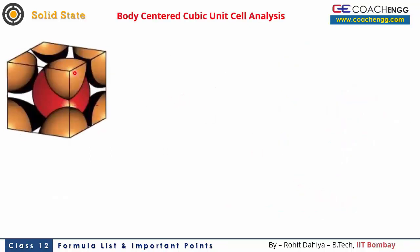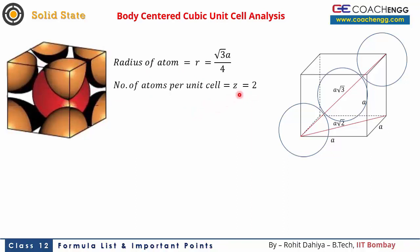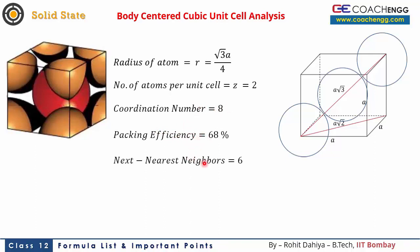Now let's look at the body-centered cube (BCC). Here there are atoms at all 8 corners, and one atom exactly at the body center of the cube. Along the body diagonal, three atoms touch each other — the two corner atoms and the body center atom. This gives the geometry: r = (√3 × a) / 4, where 'a' is the edge length and r is the radius. BCC has 2 atoms per unit cell. The coordination number is 8, meaning 8 nearest neighbors. The packing efficiency of this system is 68%.